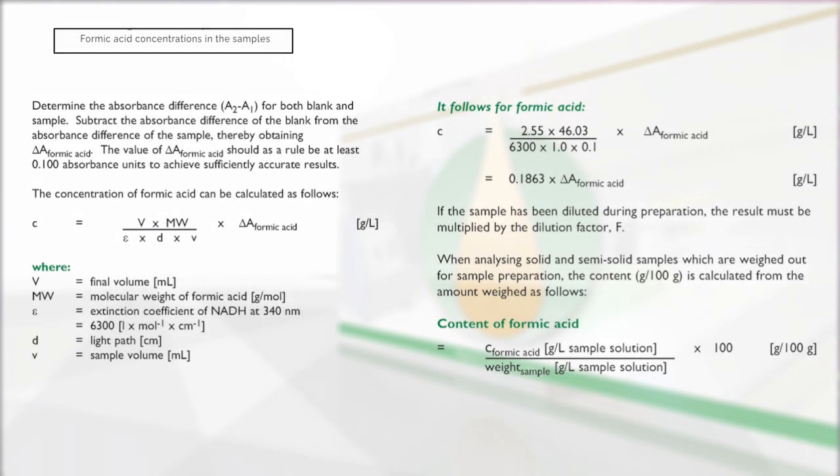The absorbance readings A1 and A2 of the sample and blank reactions are used to calculate the formic acid concentrations in the original samples.